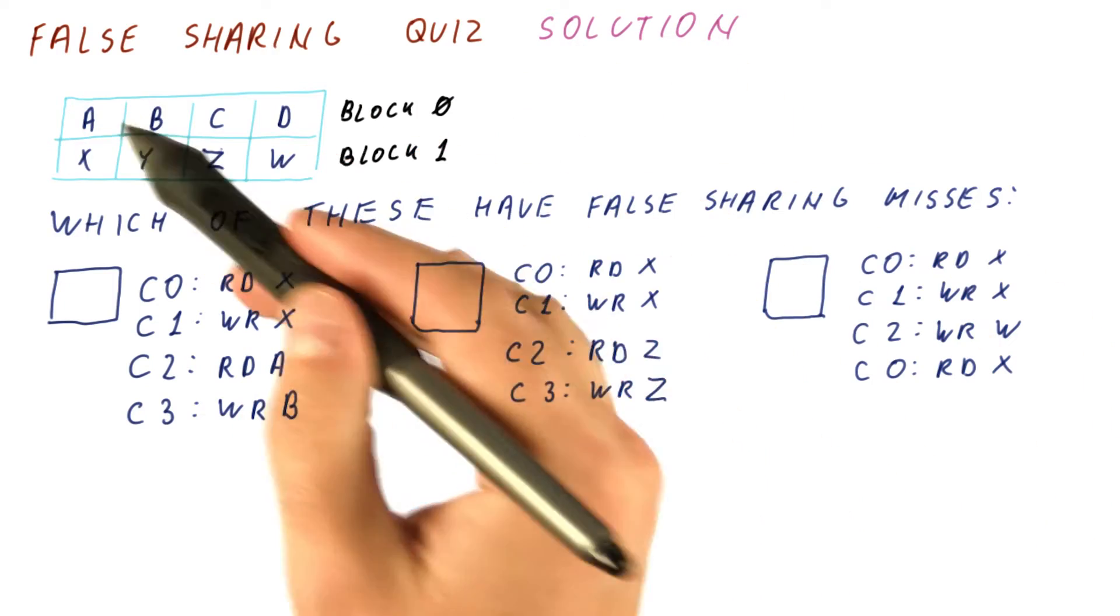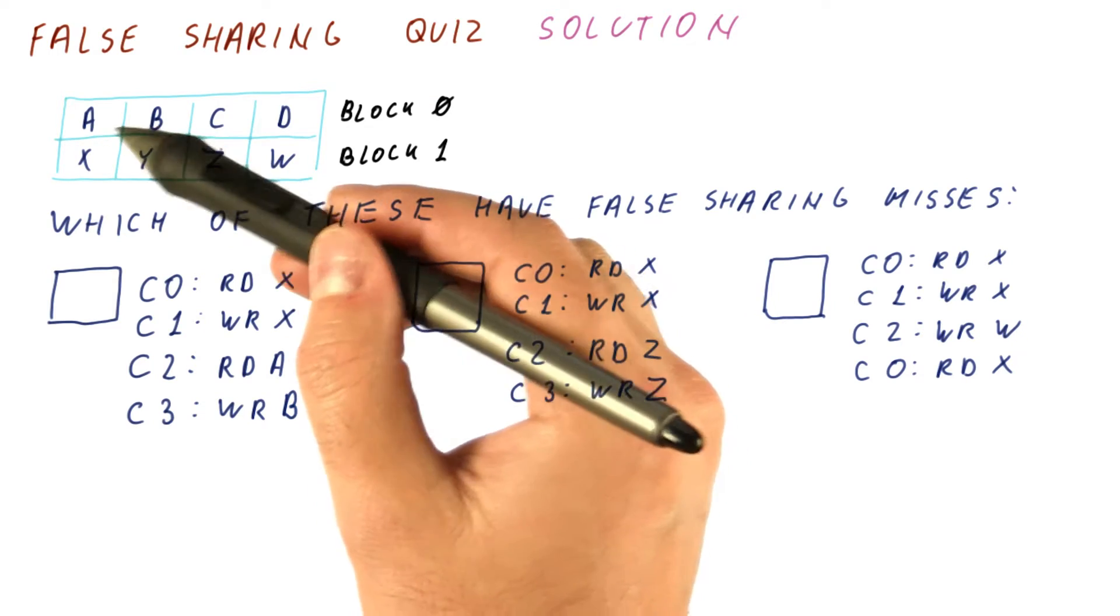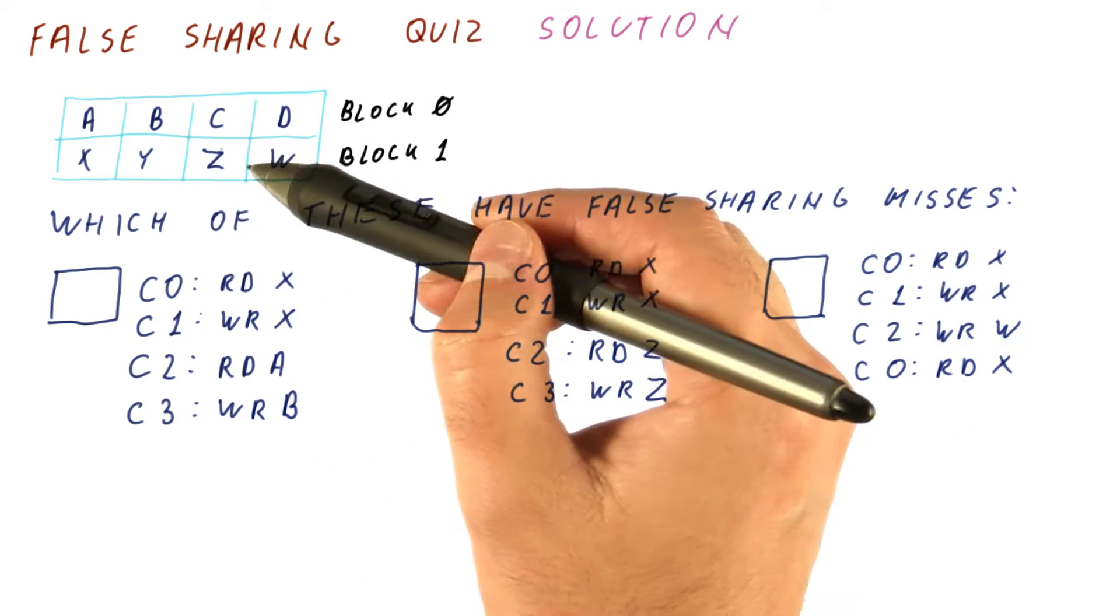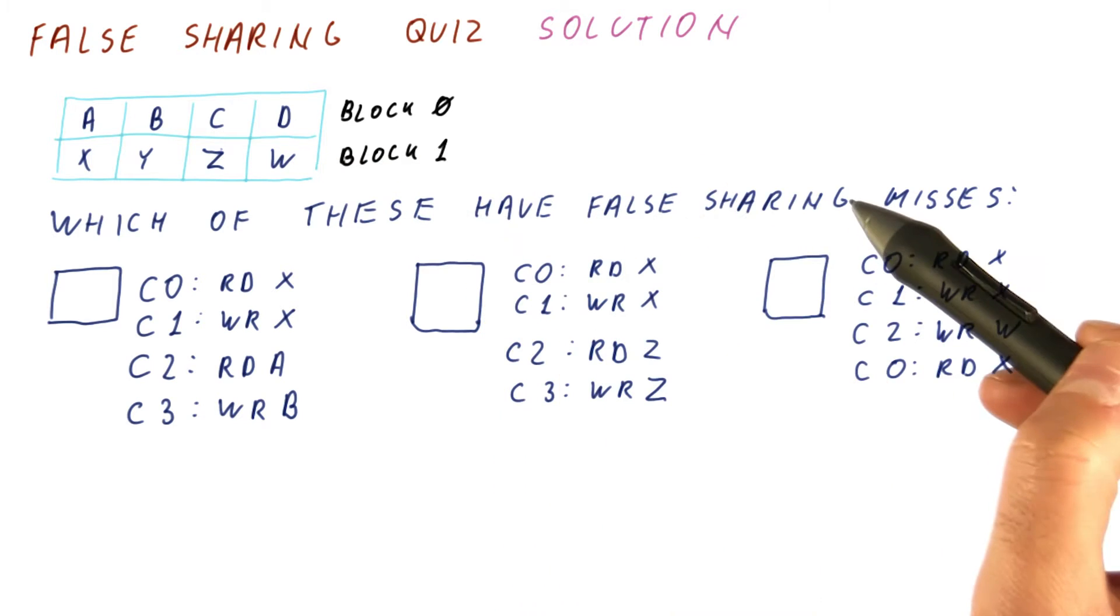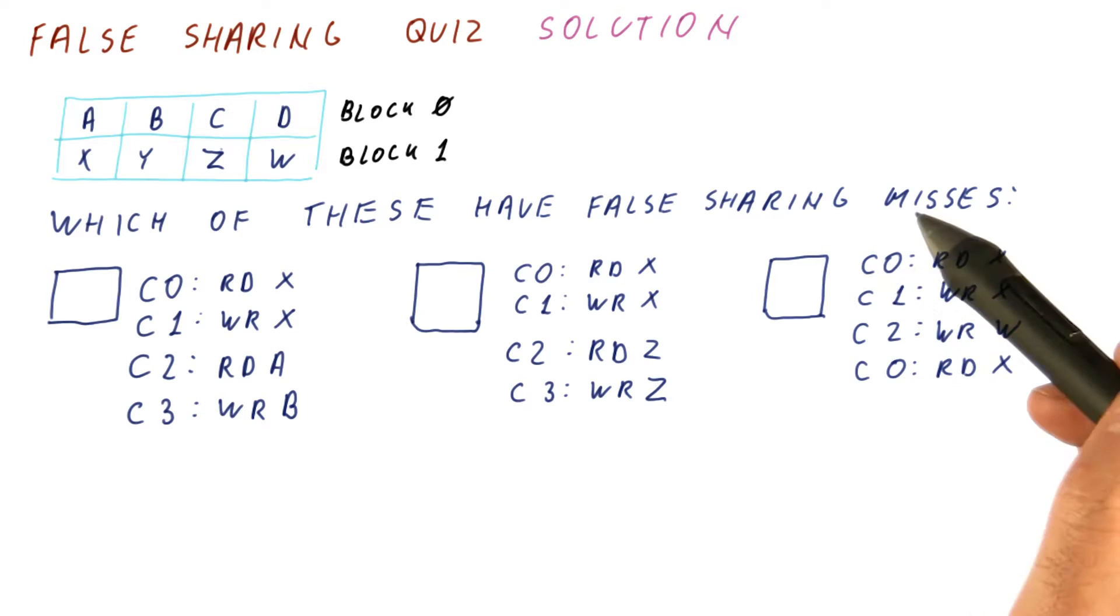Let's look at the solution to our false sharing quiz. We have two blocks: a block that has A, B, C, and D in it, and a block that has X, Y, Z, and W in it. We're looking for which of these, if any, have false sharing misses.